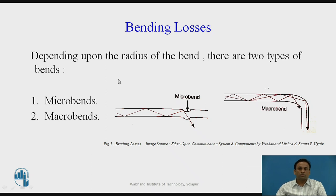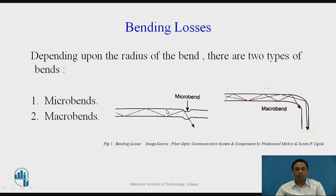Depending on the radius of the bend, there are two types of bends: microbend and macrobend. The microbend, as shown in the figure, is caused by imperfections of the layer — overlapping of core and cladding. Whenever light is transmitted into the core, it should follow total internal reflection and should not enter the cladding. Due to microbend, light at the bend point comes out into the cladding and data is lost.